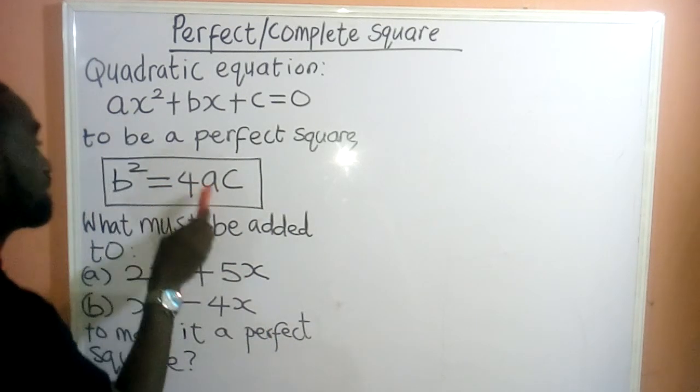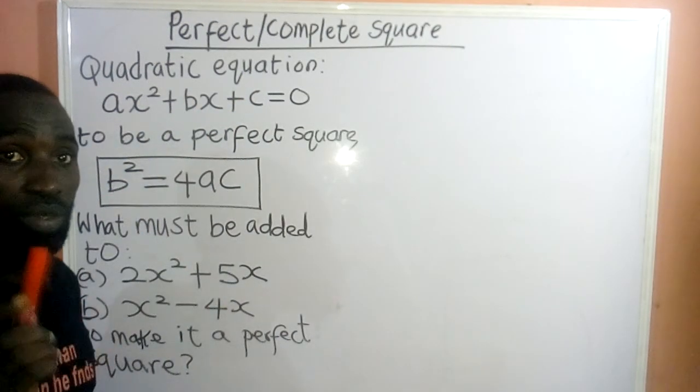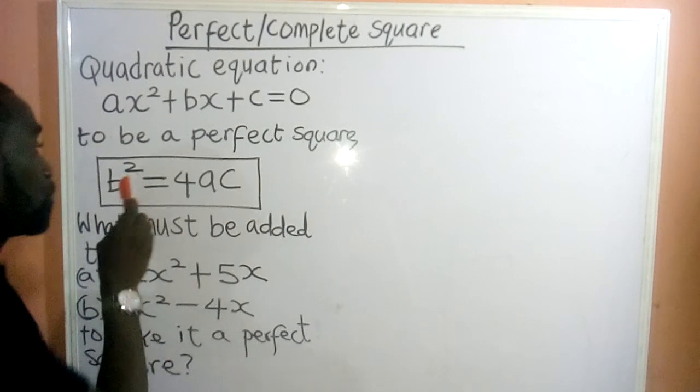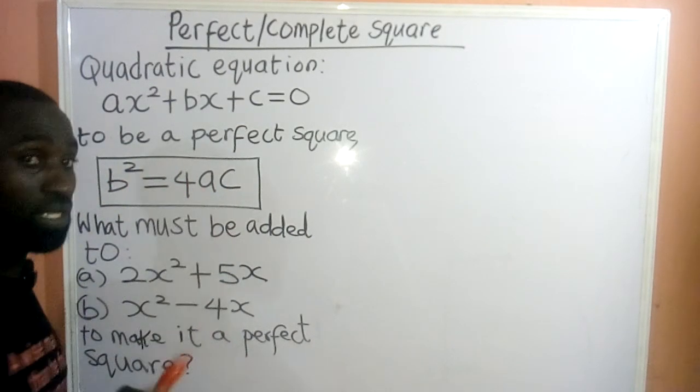Our a is this, our c is this, our b is this. So, which implies, under perfect square, we use this formula, b² = 4ac.